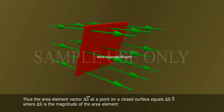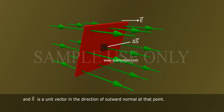Thus, the area element vector delta s bar at a point on a closed surface equals delta s n cap, where delta s is the magnitude of the area element and n cap is a unit vector in the direction of the outward normal at that point.